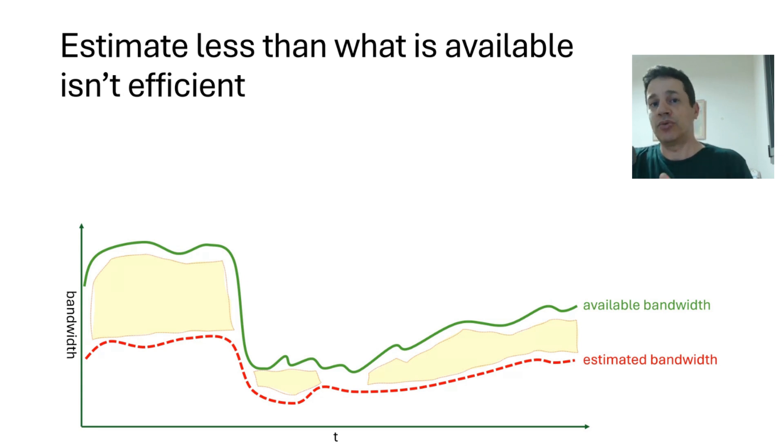So what happened is that this is a missed opportunity. We have more bandwidth than we estimated, which means that we can send more bitrate, which means that we can have a higher video quality. So this is a missed opportunity by estimating less than what is available. We're inefficient here.